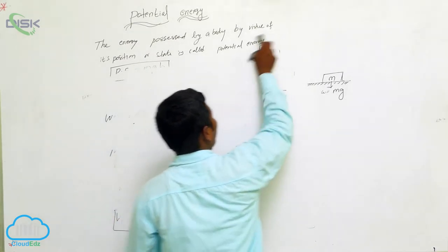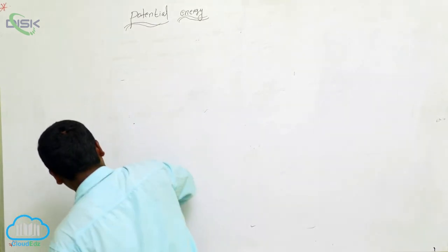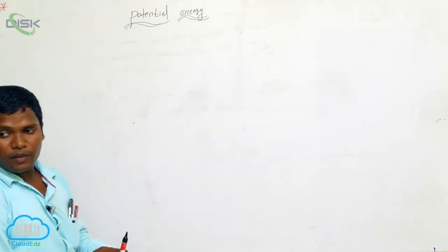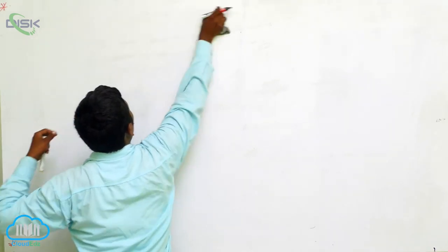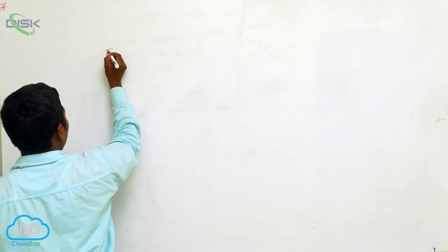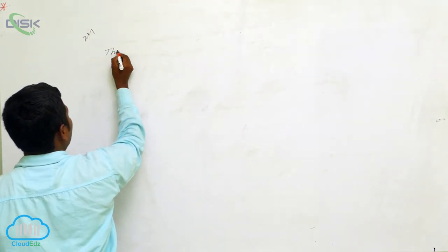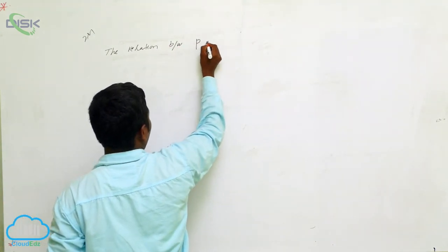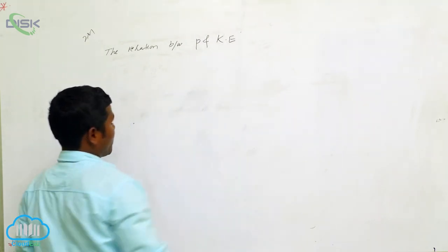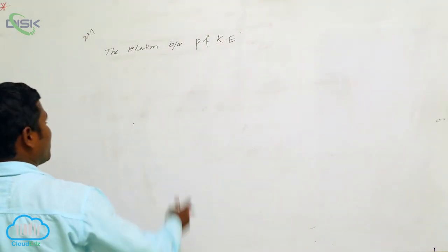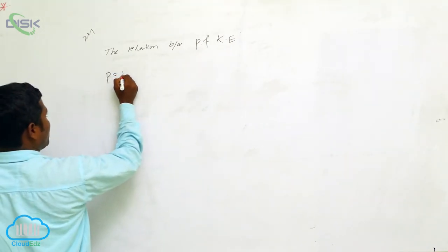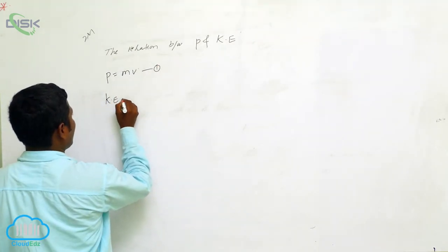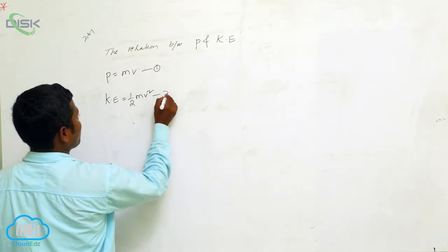Now we are going to discuss the relation between momentum and kinetic energy — two marks important. The relation between P and KE. P stands for momentum. The formula for momentum is P equals MV — equation number 1. Kinetic energy KE equals one-half MV squared — equation number 2.